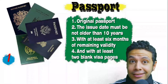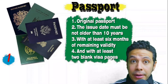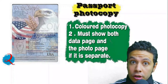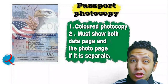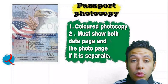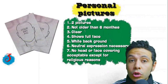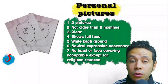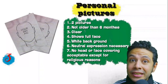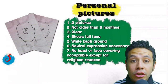Regarding required documents: your passport must be original, not older than 10 years, with at least six months of remaining validity and at least two blank visa pages for stamps. You will also need a passport photocopy — possibly colored — showing both the data page and the photo page. For personal pictures, you will need at least two photos, not older than six months, clear, showing your full face, with a white background preferred, and a neutral expression. No head or face covering is acceptable except for religious reasons.